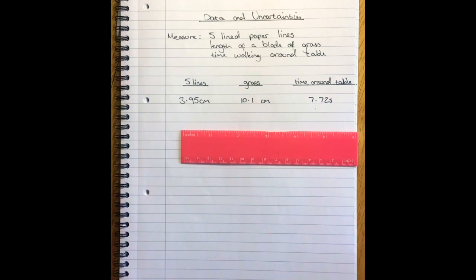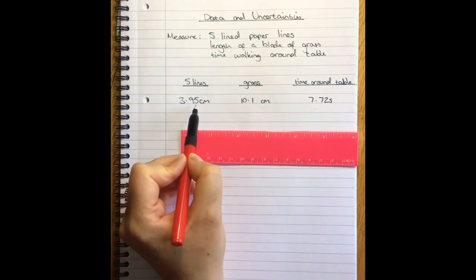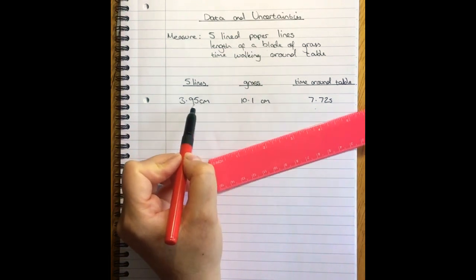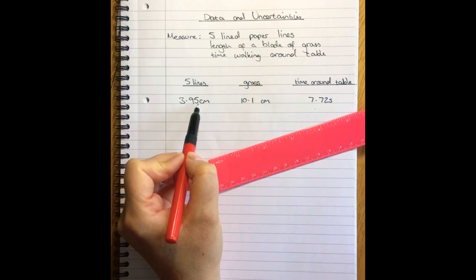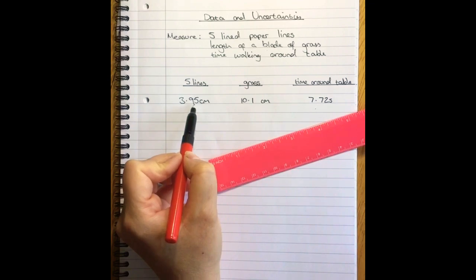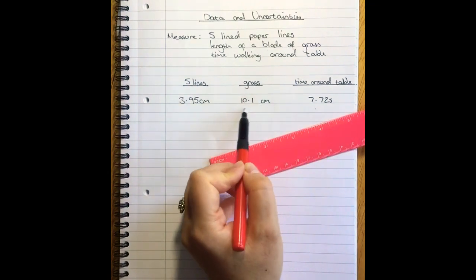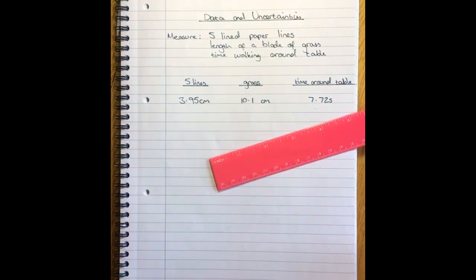And the answer is no, I have not. Because if I was able to judge to half a millimetre in my five line measurement here, so here I have individual centimetres, millimetres, and then half a millimetre, I should have been able to make the same precision for my grass.